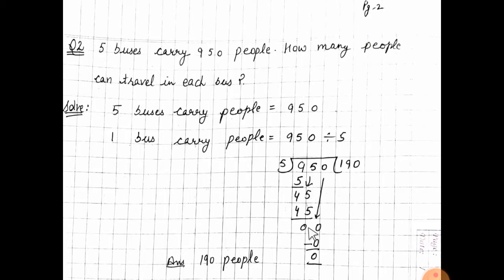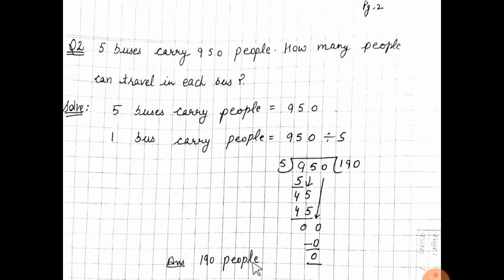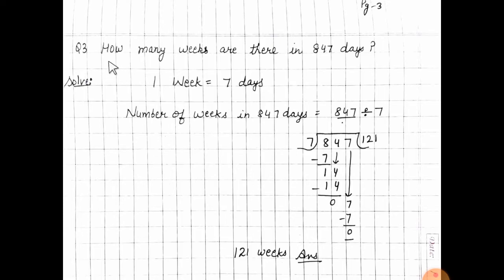45 को 45 में से subtract किया — 0. एक digit अभी रहता है आपका 0. 0 को नीचे move करो। अब 0 को 5 से divide किया — 0 पे 5, 0. 0 में से 0 को subtract किया — 0. It means 190 people आपका answer आ रहा है, कि एक bus में 190 people travel कर सकते हैं।